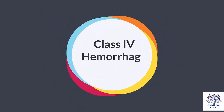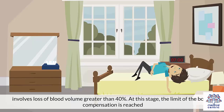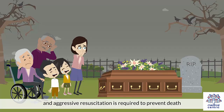Class IV hemorrhage involves loss of blood volume greater than 40%. At this stage, the limit of the body's compensation is reached and aggressive resuscitation is required to prevent death.